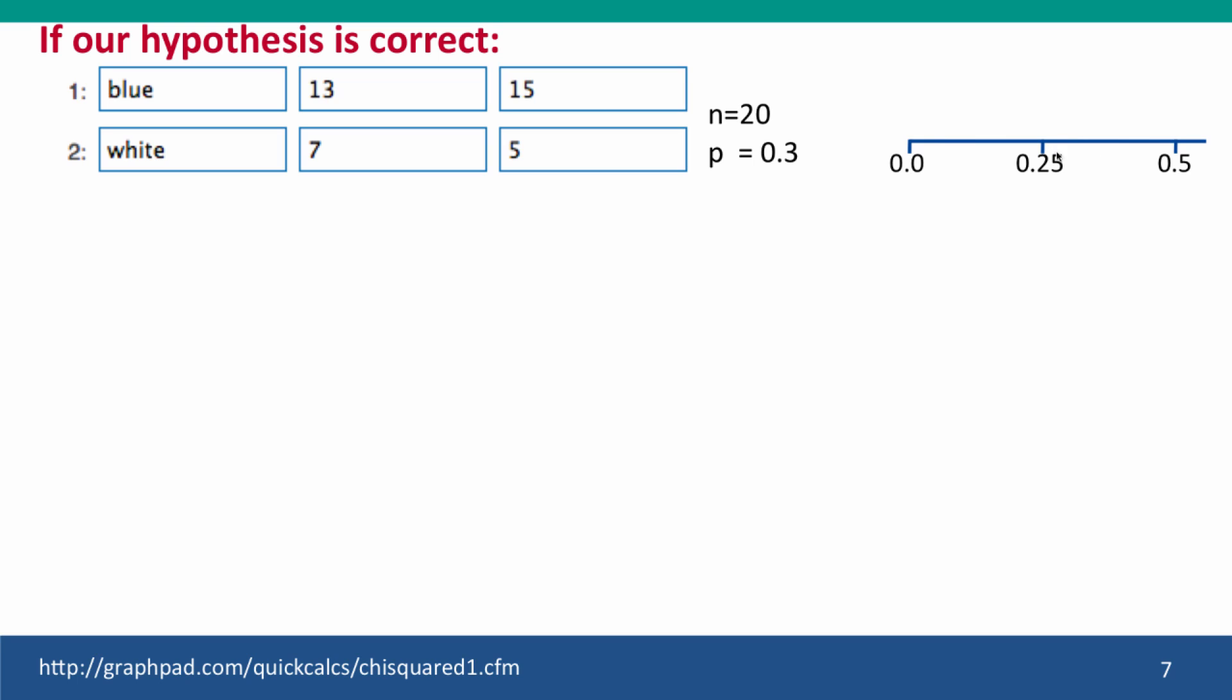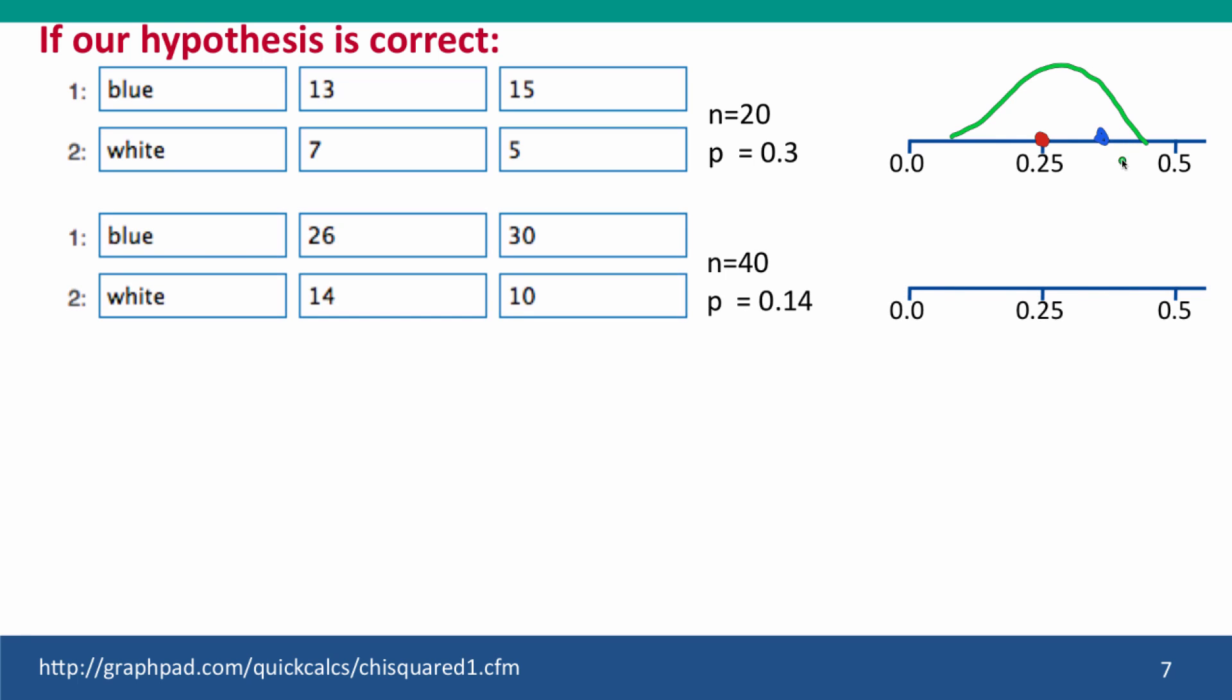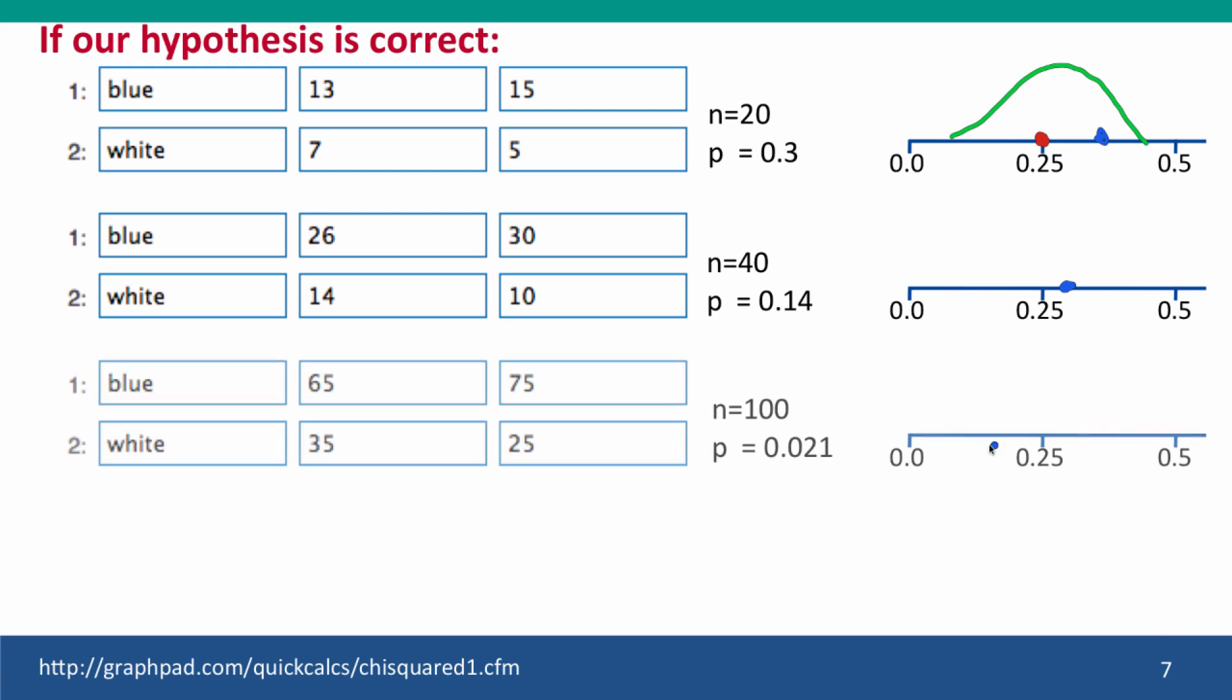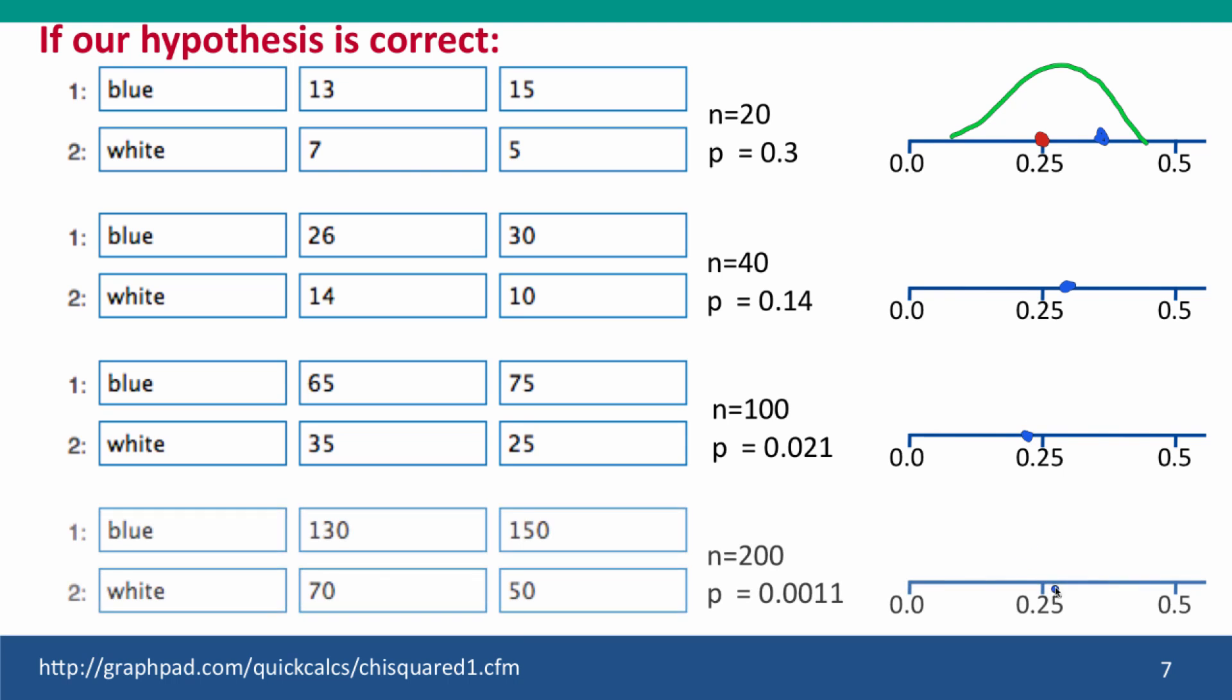So here's our result with sample size of 20, there's the distribution. It might be that when we repeat our experiment with a sample size of 40, we now find that our sample gives a different value. Maybe it's closer to 0.25. And when we use a larger sample, maybe it's over here or here. So that when we use a larger sample, our result gets closer to the population mean so that it's always within the expected distribution for the sample size that we used.